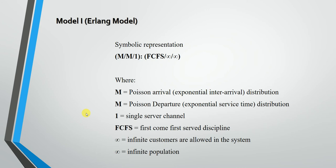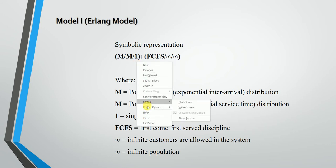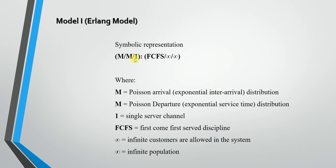The first queuing model is Model 1, also called the Erlang model. The symbolic representation is M/M/1:FCFS/∞/∞. As seen in the third video of this chapter, the first symbol represents the arrival rate, second represents the service rate, third represents the number of service channels, fourth represents the type of service discipline, fifth represents the number of customers allowed in the system, and the last represents the type of population.